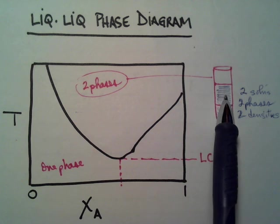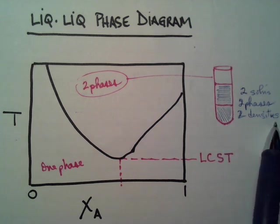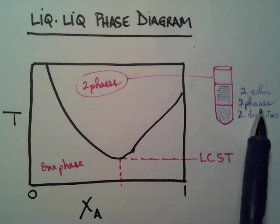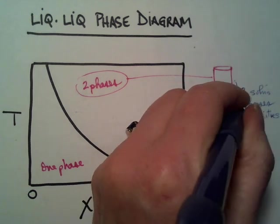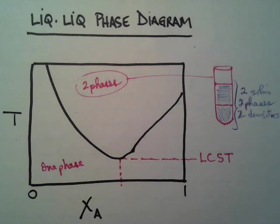And below it would be two solutions. So I have here two densities, two phases, two solutions. So that's what all of this is.